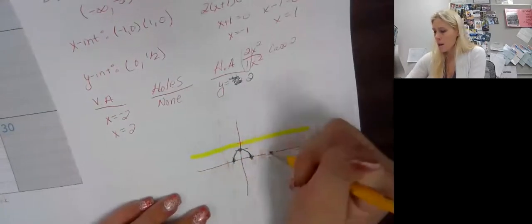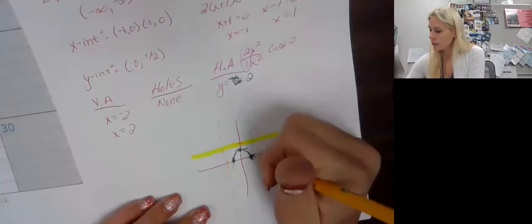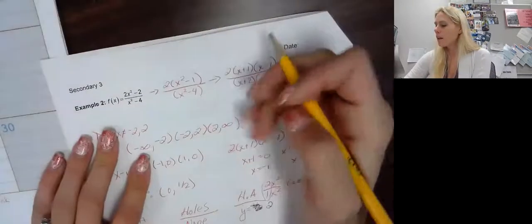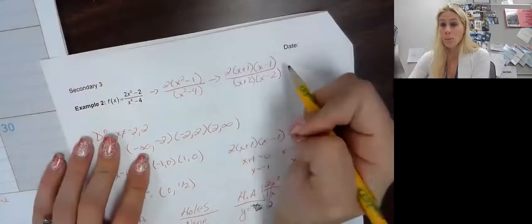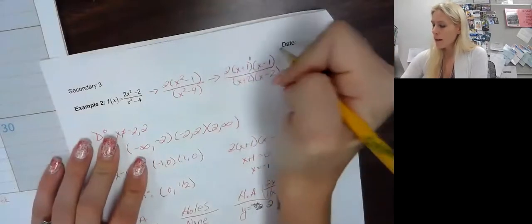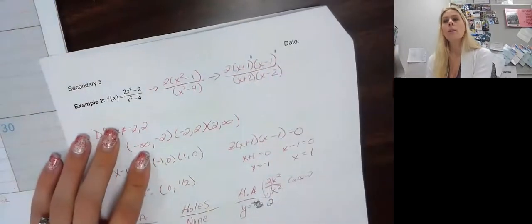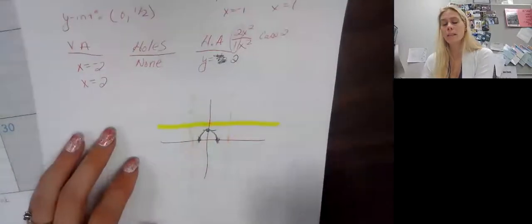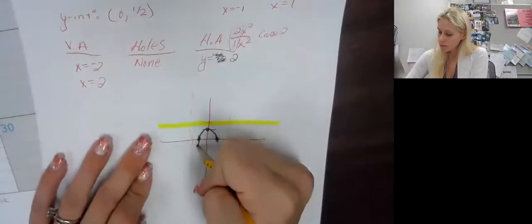Well, that's based on if we're touching or crossing, right? So crossing would come down here. Touching will make it bounce back up. So let's look at our x-intercepts, which come from the numerator. Again, they're to the first, so they must be odd, and that must be crossing. So it's going to cross.